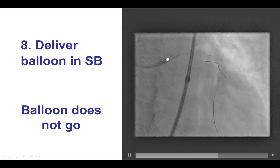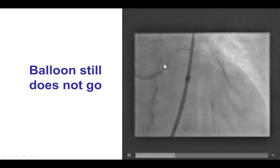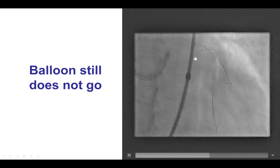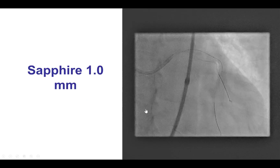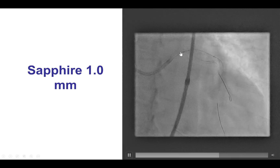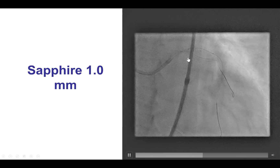The problem started here — the next step is to advance a balloon to the side branch, but the balloon would not go. We tried to push the guide in a little more for better support, but we had significant difficulty and could not advance the balloon to the side branch. Options include using smaller balloons, a microcatheter to advance through the stent struts, increasing support with a guide extension or side branch anchoring technique, or exchanging for a more supportive wire such as a wiggle wire. In this case we used a Sapphire 1.0 — the lowest profile balloon available in the US — which successfully made it through the struts of the crush stent.